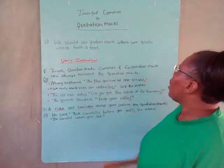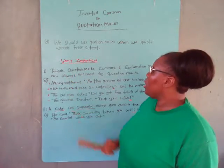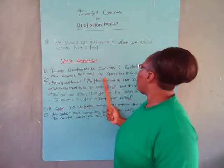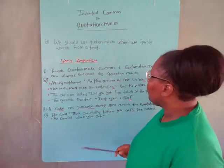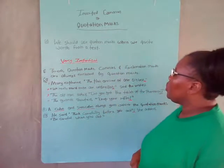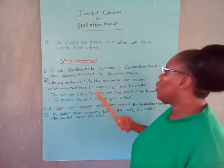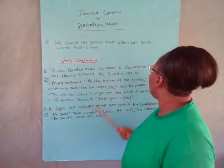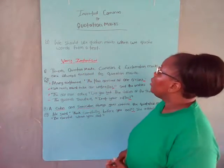We should use quotation marks when we quote words from a text. Very importantly: periods, commas, exclamation marks, and question marks are always enclosed inside the quotation marks. So whenever you're writing and you're going to use an exclamation, a period, a question mark, or a comma, it's supposed to be inside the quotation mark.